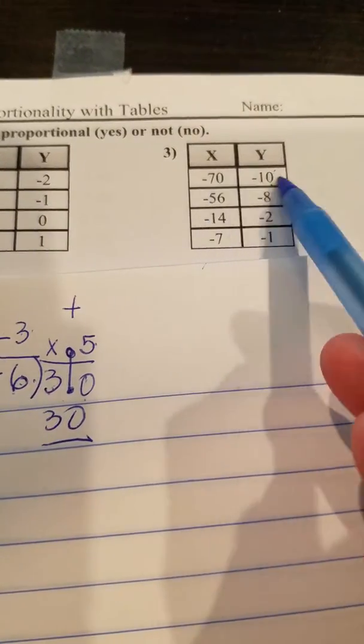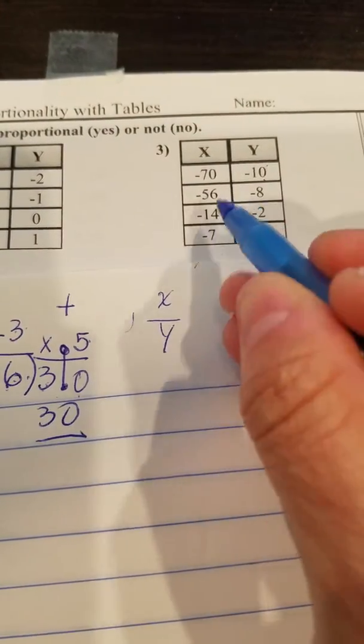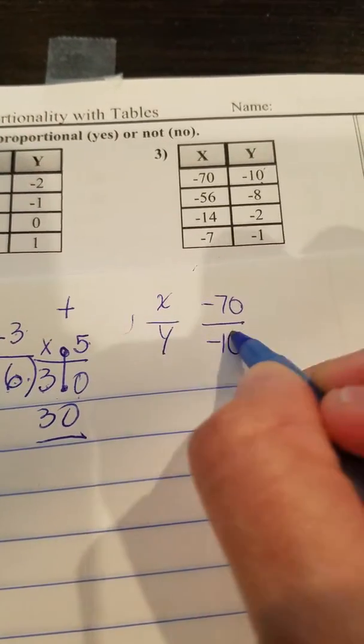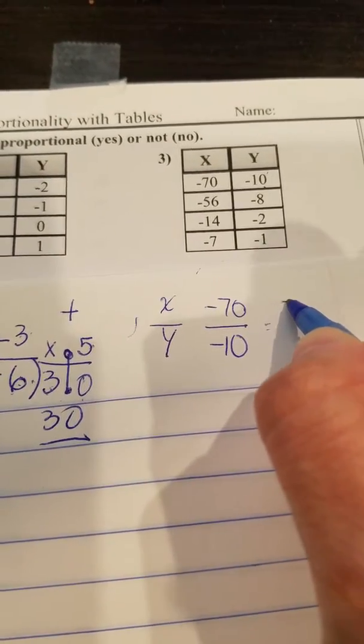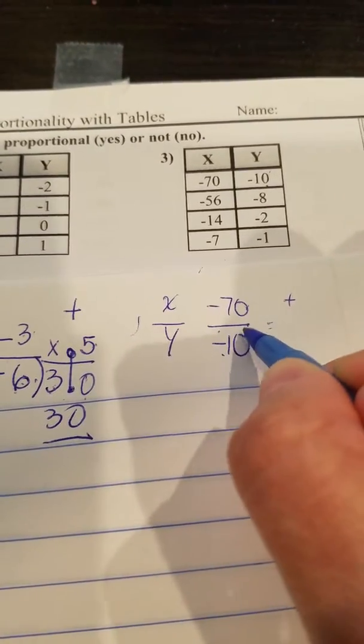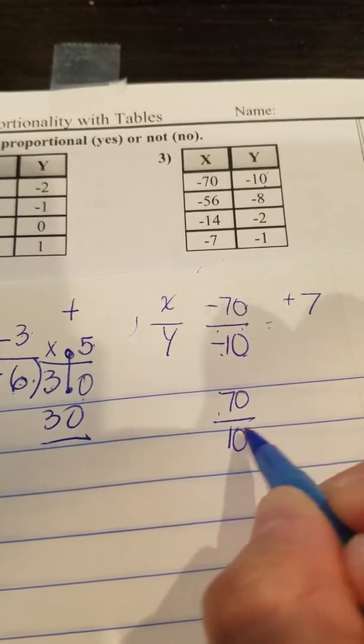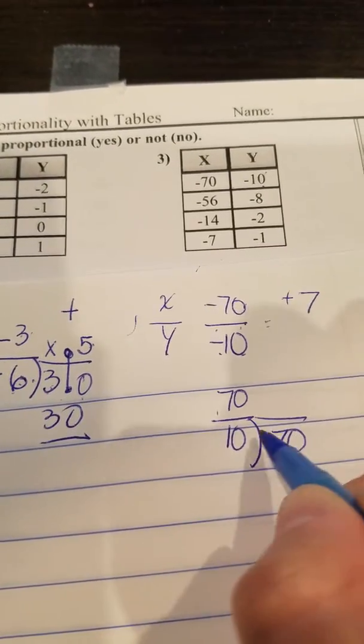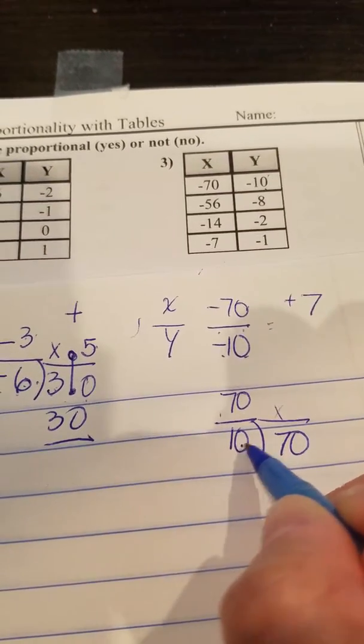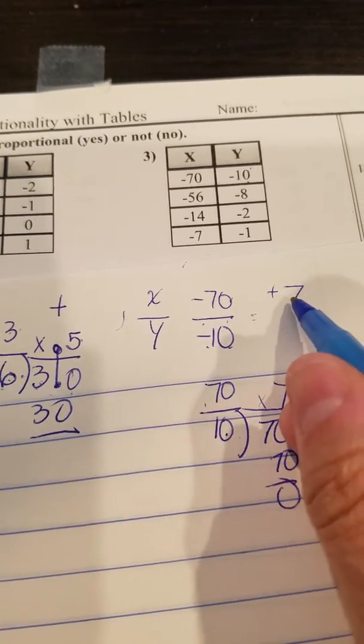But I mean, if you don't see that visually, let's do the same thing. So remember, X over Y. So if X is negative 70 and Y is negative 10, you know your answer is going to be a positive, right? Because a negative divided by a negative is going to be a positive. 70 divided by 10 is 7. If you don't see it, guys, don't worry. Do this. And say to yourself, how many times does 10 go into 7? No time. How many times does 10 go into 70? 7 times. 7 times 10 is 70. And you know it's 7.